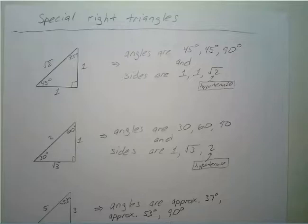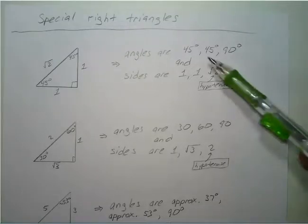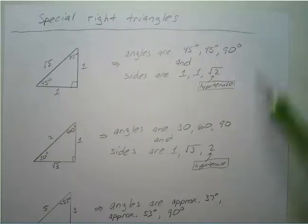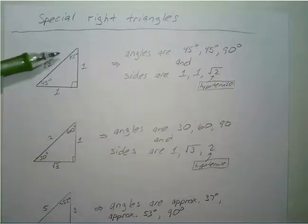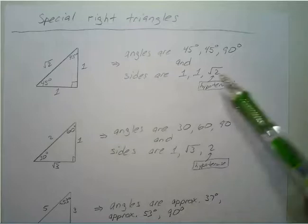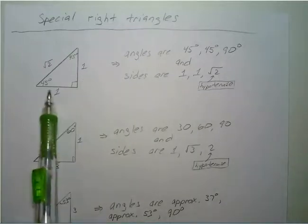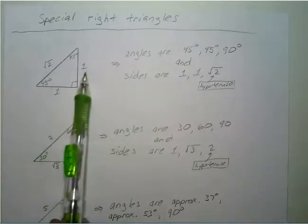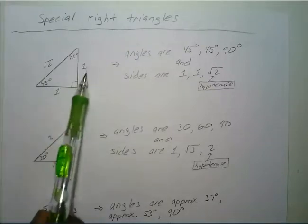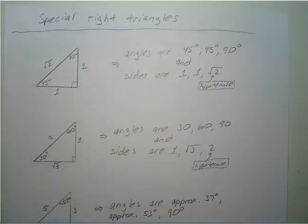We have three special right triangles. The first is the 45-45-90 triangle, because the angles inside are 45 degrees, 45 degrees, and 90 degrees. The sides are 1, 1, and square root of 2 — it could be 1 inch, 1 inch, square root of 2 inches, or any unit. It's just 1, 1, and square root of 2.